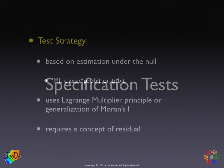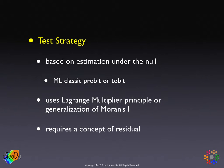Let's start with the specification tests. When we discuss specification tests for spatial effects in the linear regression model, a very effective approach is to use the Lagrange multiplier principle, because that only requires estimation under the null. Since the preferred estimation method for the classic probit and Tobit is maximum likelihood, we have all the tools to get started. We can take Moran's I, which is very similar to a Lagrange multiplier statistic — actually a scaled form of it — and generalize it to the case of these latent variable models.